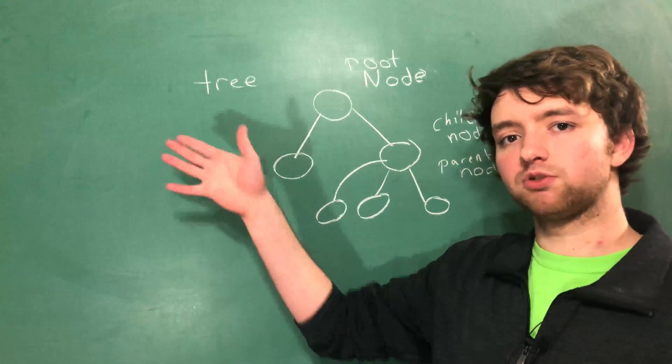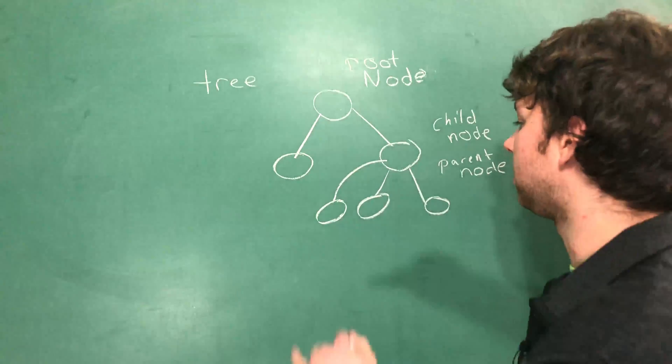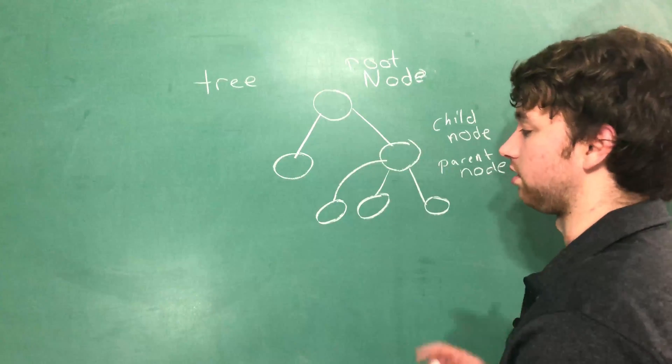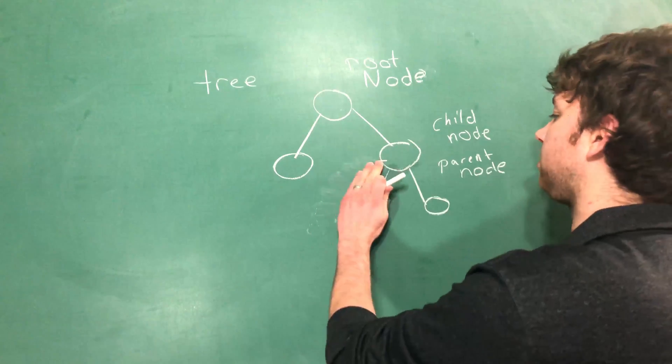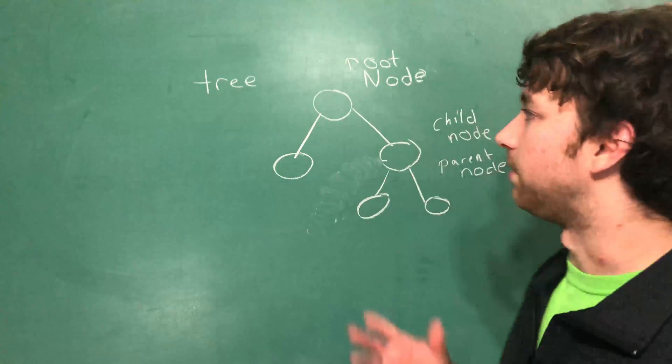There are specific types of trees, specifically binary trees, where you can't have three nodes—you can only have zero, one, or two. But we're just talking about general trees here, so it's okay to have multiple nodes.